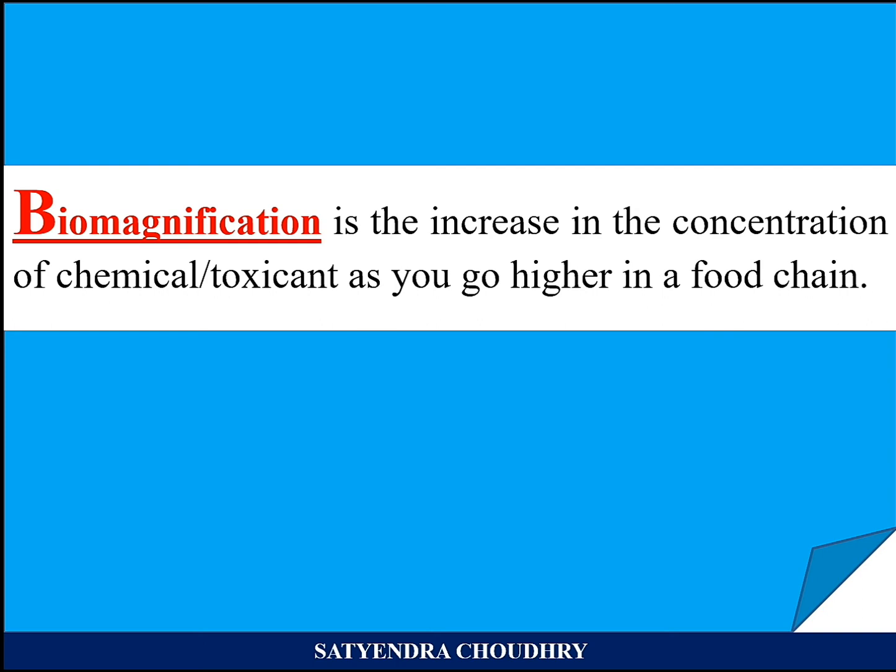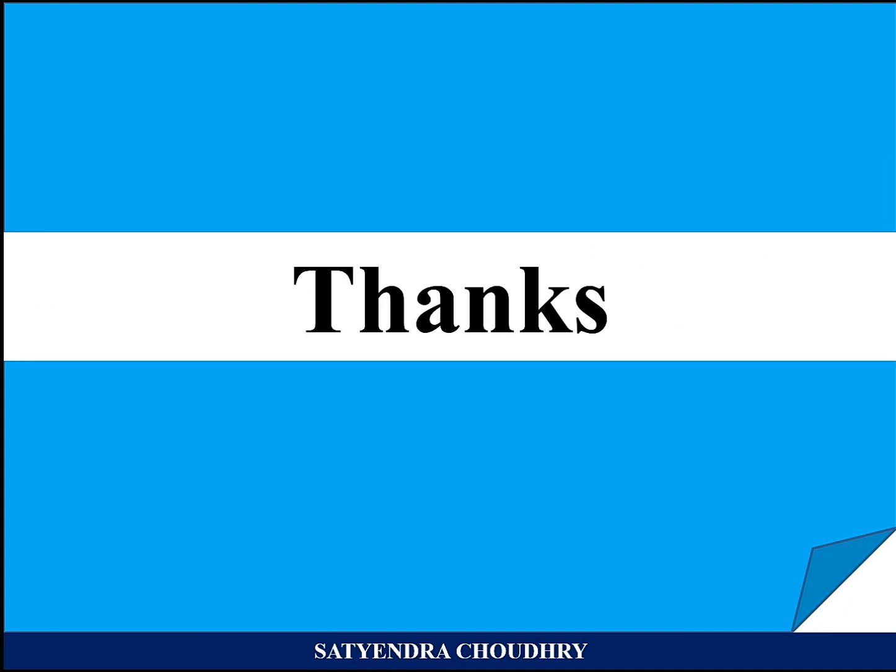The concentration of mercury will be lower at the first trophic level, that is the producers, and the concentration will be maximum at the higher trophic level, that is the birds.